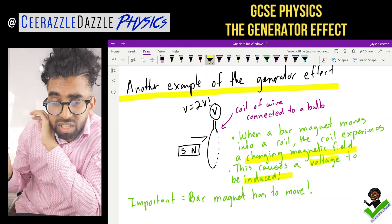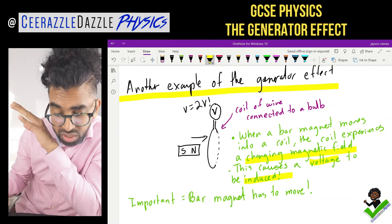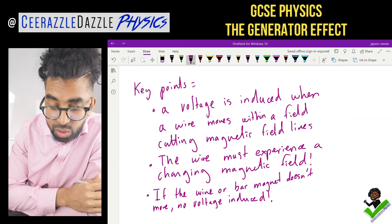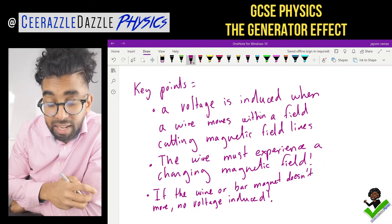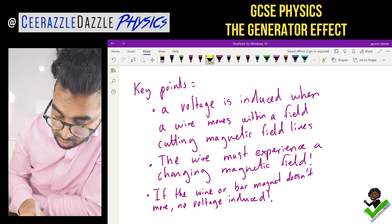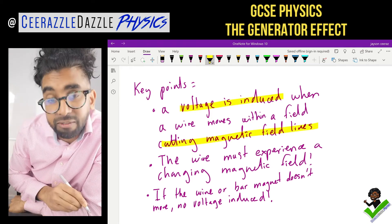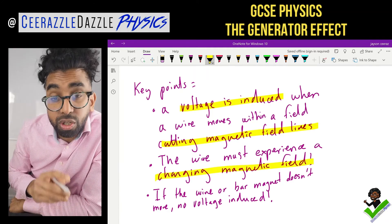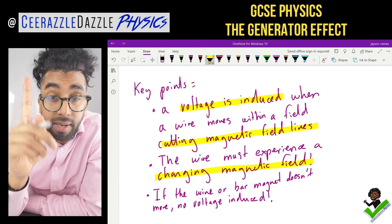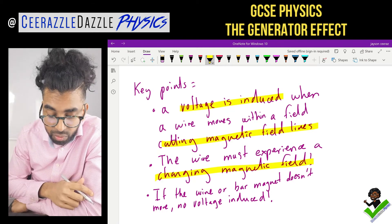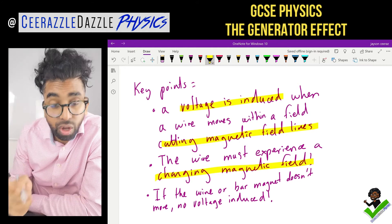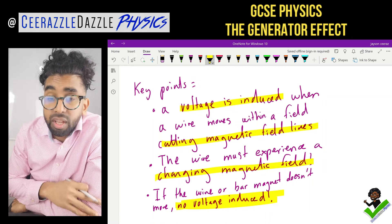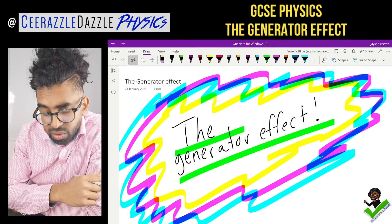Let's summarize the key points. First: a voltage is induced when a wire moves within a field, cutting magnetic field lines. Second: the wire must experience a changing magnetic field to induce voltage. Third: if the wire or bar magnet doesn't move, no voltage is induced.